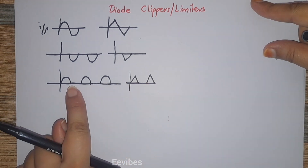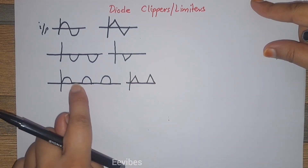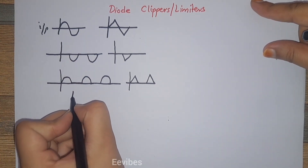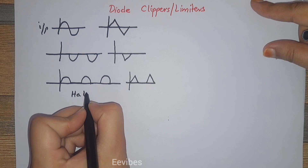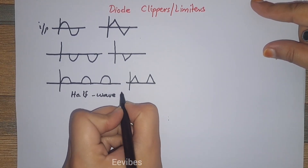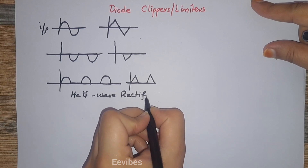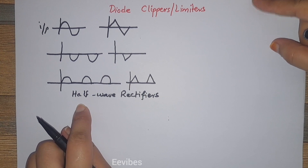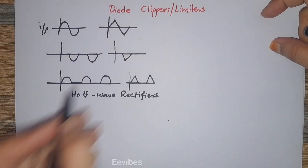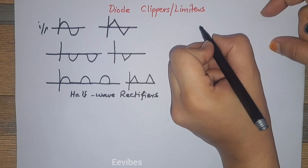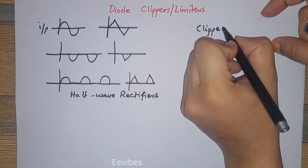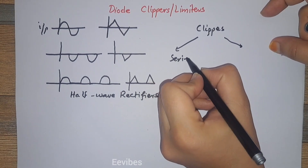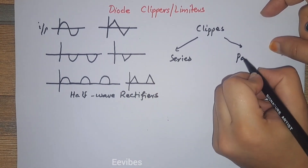If you notice the output waveform of either type, you can clearly see that it is similar to the waveform of the half wave rectifier. So half wave rectifiers are the simplest example of voltage clippers or limiter circuits. Now, the clipper circuits can be further classified into two categories: series clippers or parallel clippers.